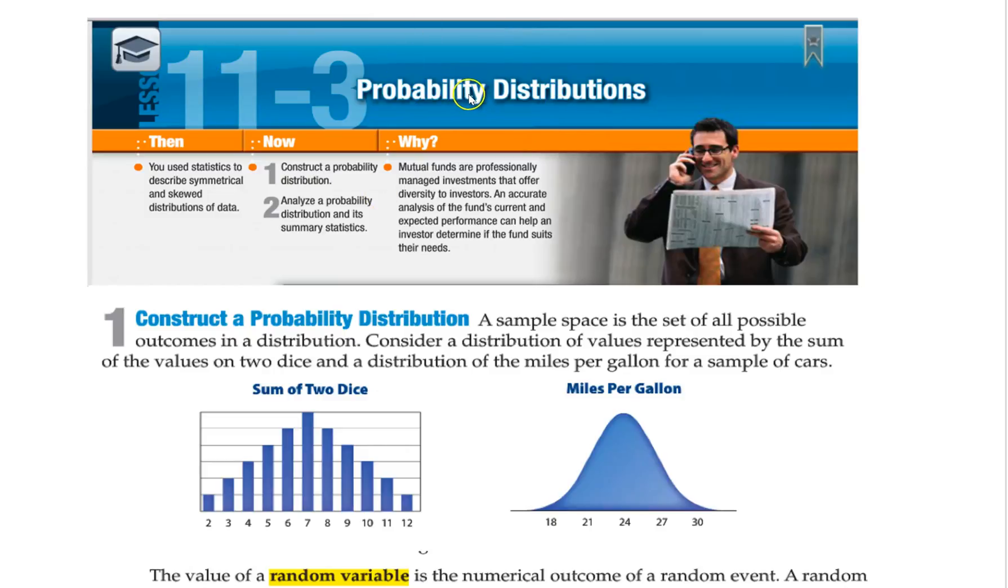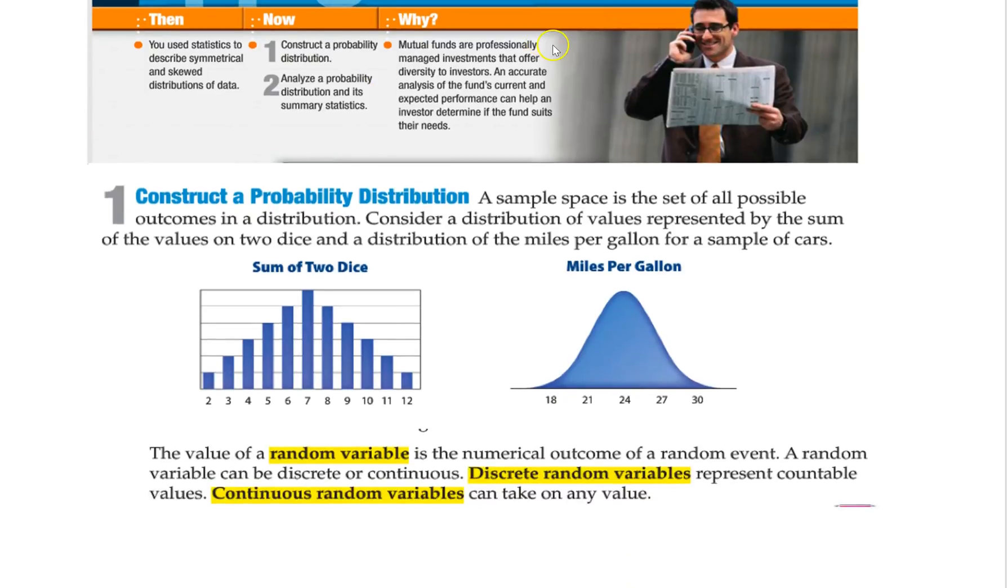11.3 probability distributions. Probability distributions show you all the possible outcomes of the thing you're talking about. Like in here they give two examples. If you roll two dice, all the outcomes where you get any number between 2 and 12, where 7 is the most likely, and 2 and 12 are the least likely.